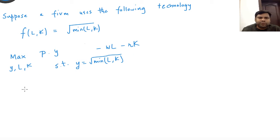We will solve this problem in two steps. First, we will solve the cost minimization problem of the firm, which is minimize with respect to L,K: WL plus RK subject to Y equals root of min(L,K).